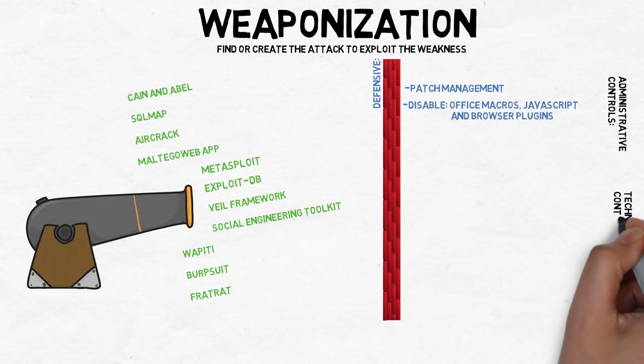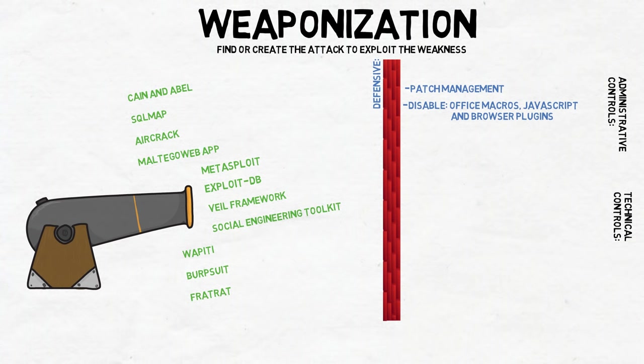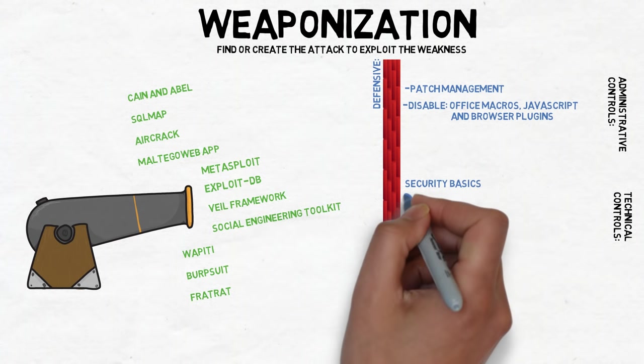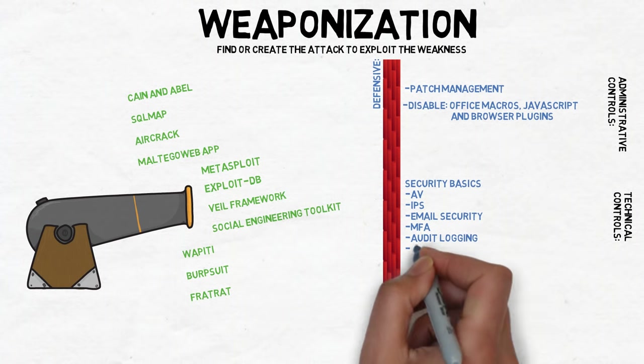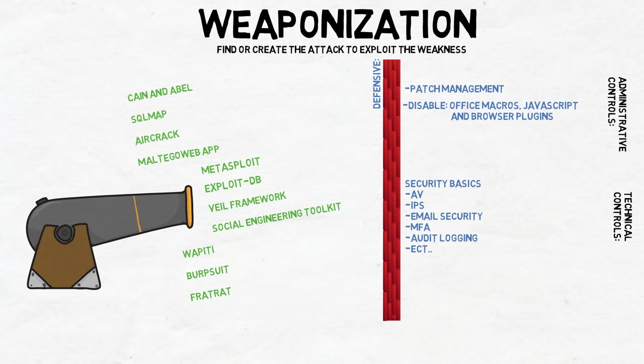Some technical controls we can apply at this stage are things like antivirus on the endpoint and perimeter to protect against known malware. An IPS that's specifically tuned to look for exploit attempts, not just port scanning and banner grabbing like in the reconnaissance stage. And email security that includes antivirus and anti-spam. In later stages, we'll look at specific email security features that we can enable.